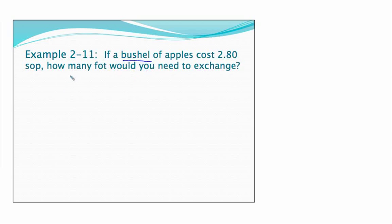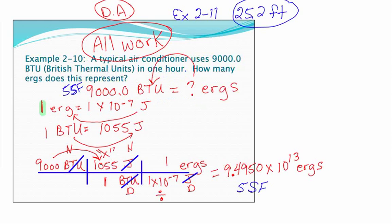In this case I've got a bushel of apples, so I have one bushel that is going to cost me 2.80 sops. The question is how many fots? These are funny units, but I looked these up once and believe it or not, most of these are real units from back in history. I want to find out how many fots are equal to 2.80 sops. It's more about the process here - as long as I can find conversions, it's okay if we don't really understand what the unit is.